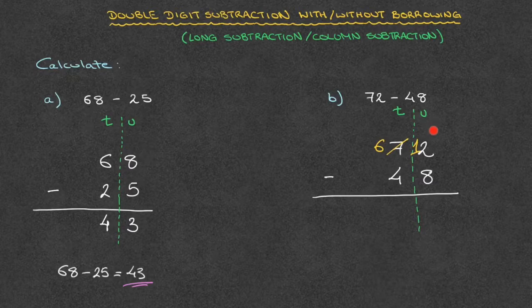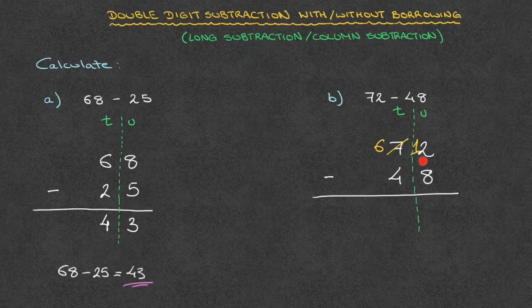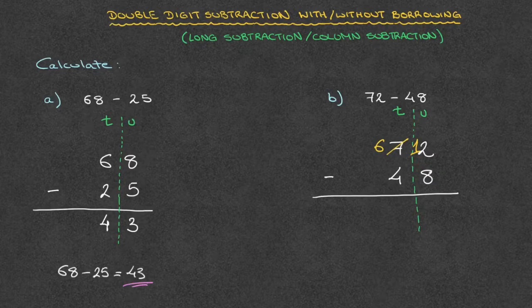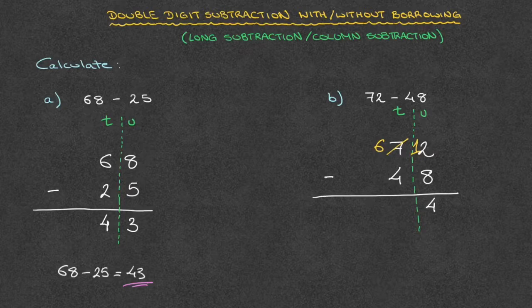Now that that's done, looking back at the units column, we have 12 minus 8. And 12 minus 8 is 4. So we write 4 at the bottom of the units column.